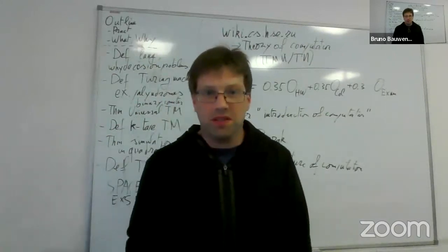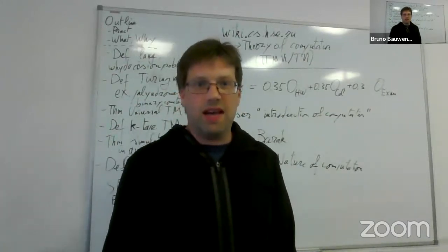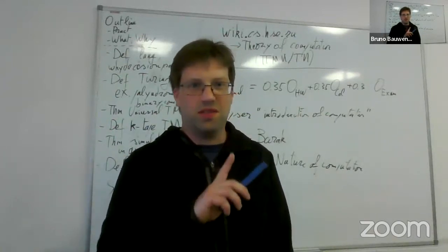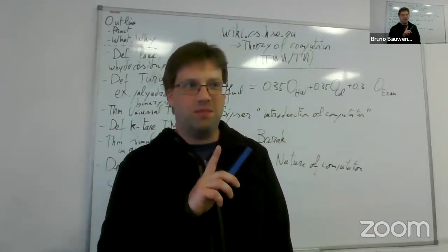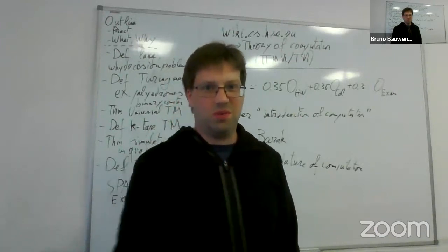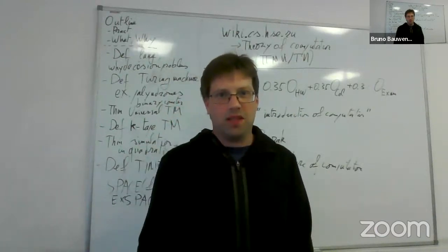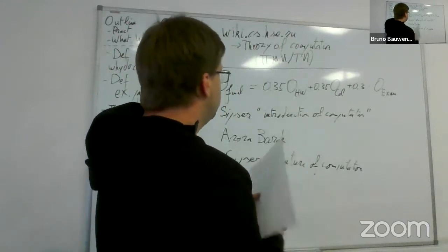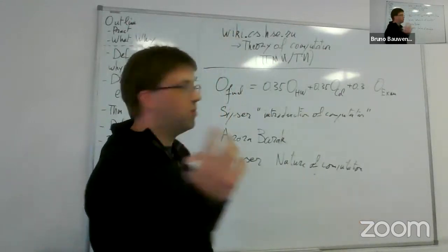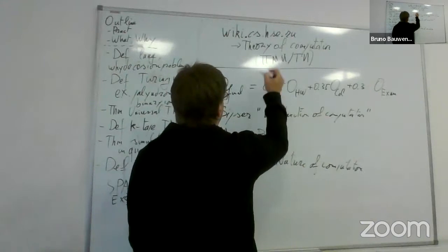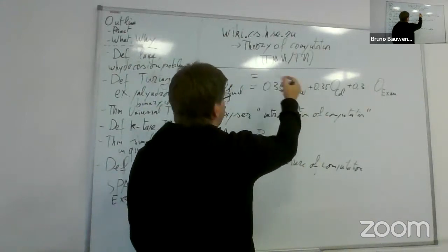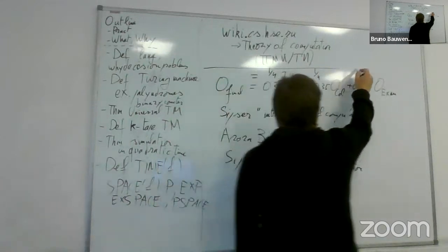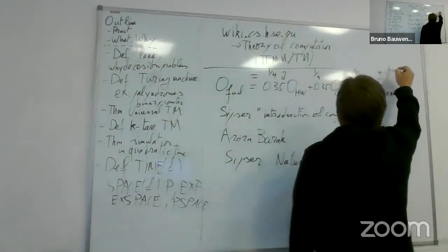For software engineering students, the last lecture on parameterized complexity is optional for everyone else, but mandatory for them. The grading formula for software engineering is different because they have more materials in the third module, with coefficients of one quarter each.